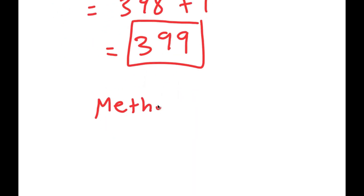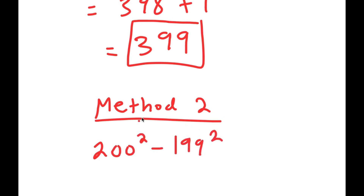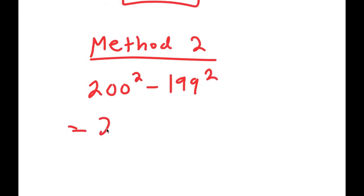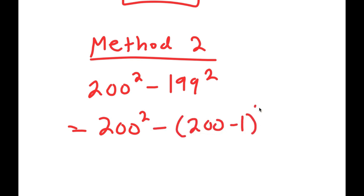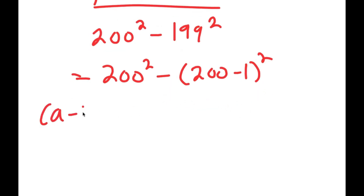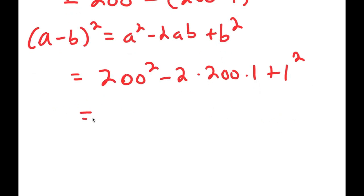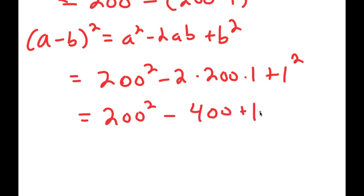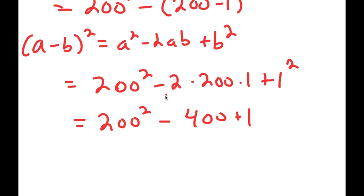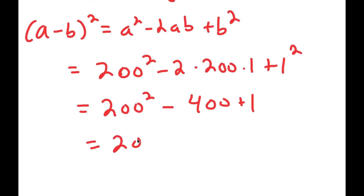For method two, I have 200 squared minus 199 squared, and now I'm going to rewrite 199 as 200 minus 1 squared. So now I get 200 squared minus 200 minus 1 squared. And a minus b squared is equal to a squared minus 2ab plus b squared, so 200 minus 1 squared equals 200 squared minus 2 times 200 times 1 plus 1 squared, which equals 200 squared minus 400 plus 1.